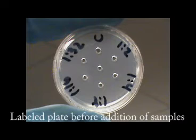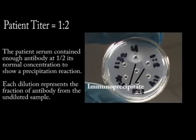Each of the patient samples and their dilutions were loaded into the remaining six wells in numerical order: undiluted, 1:2, 1:4, 1:8, 1:16, and 1:32. As the patient samples and the antigen diffuse through the media, they will meet and precipitation reactions will occur.